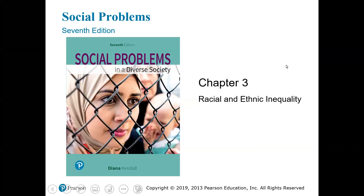Racial and ethnic discrimination are among the most diverse social problems facing the United States. A racial group is a category of people who have been singled out by others or themselves as inferior or superior on the basis of selected physical characteristics, such as skin color, hair texture, or eye shape. An ethnic group is a category of people distinguished by others or themselves as inferior or superior, primarily on the basis of culture or nationality. Race and ethnicity often form the basis of ranking between majority or dominant group members who are advantaged and have superior resources and rights.